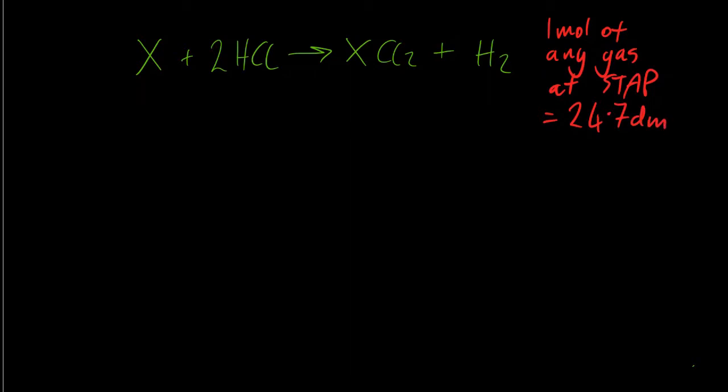Now, that's different to the number in the book, in the data booklet, because the data booklet value is at zero degrees centigrade, and we're assuming room temperature. So how much hydrogen did I make?